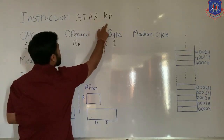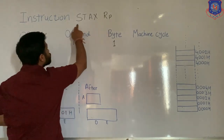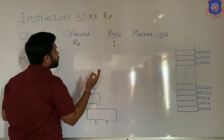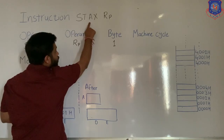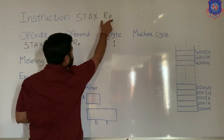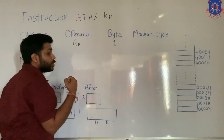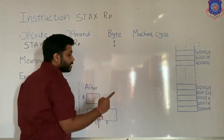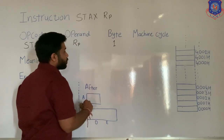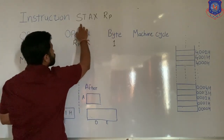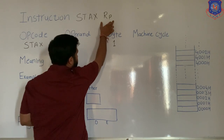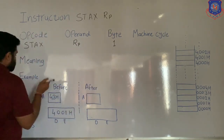STAX register panel means: store data from accumulator to the memory location which is specified in the register panel. In this portion you can specify the register panel — BC, DE, or HL — so three combinations are possible. STAX RP means store data from accumulator to the memory location specified in the register pair. Let's see one example to understand clearly.